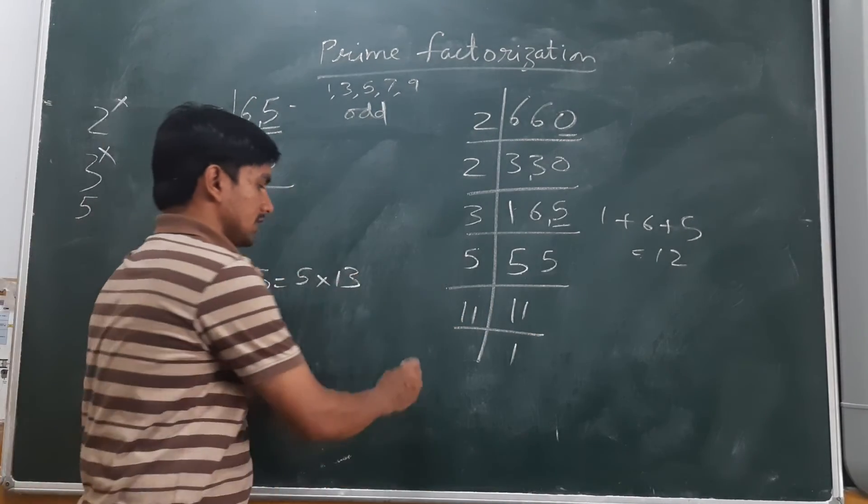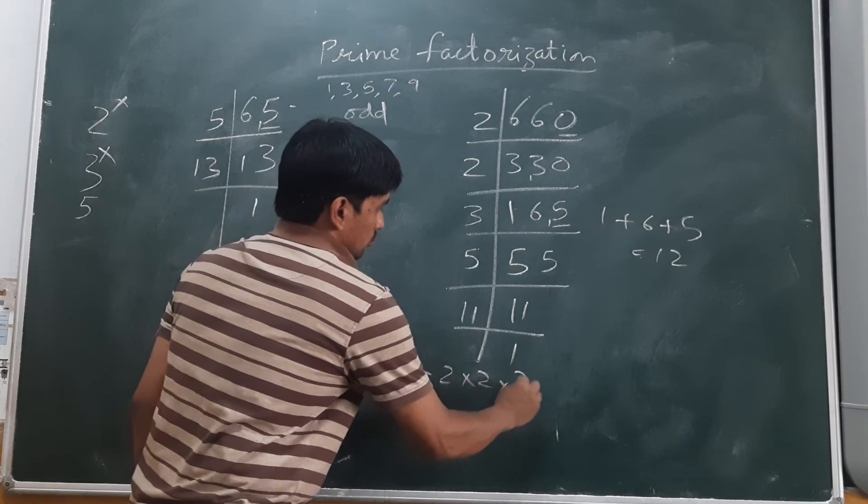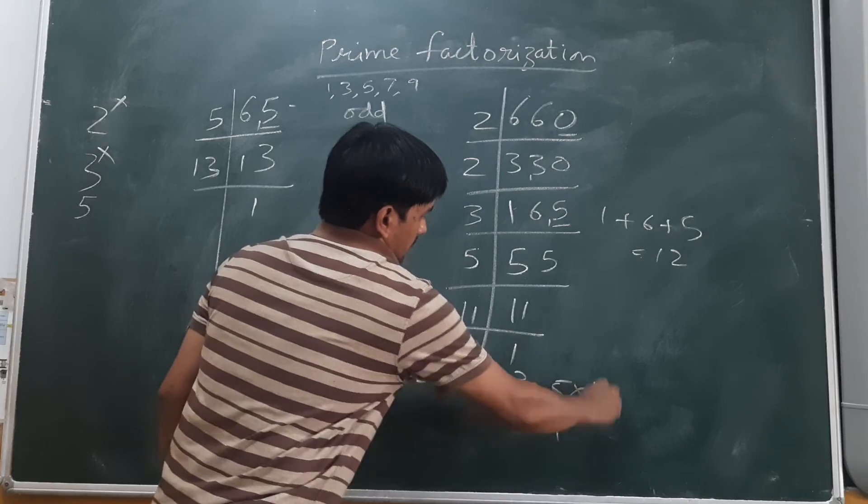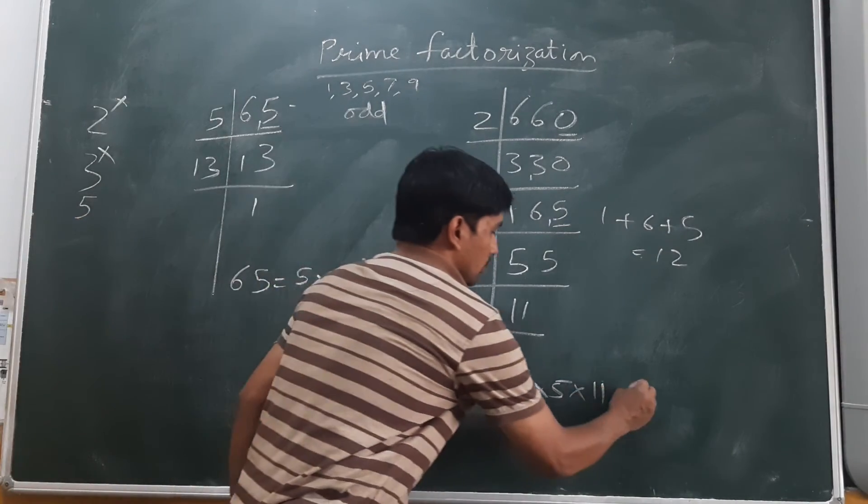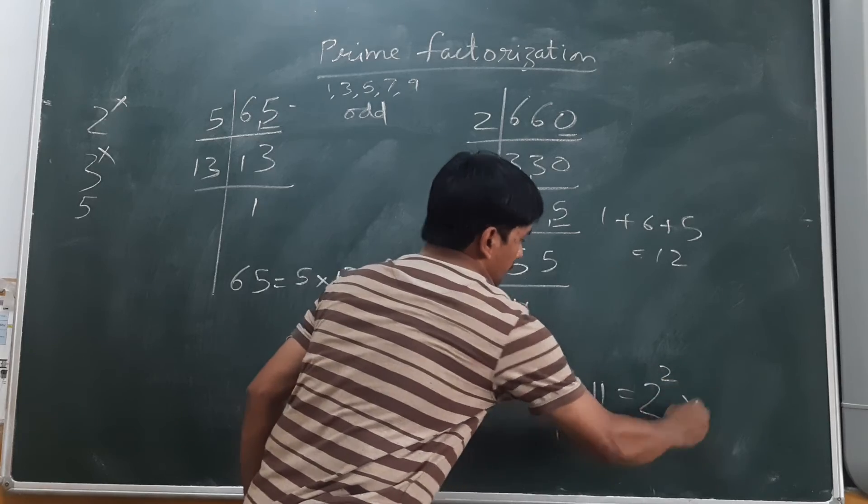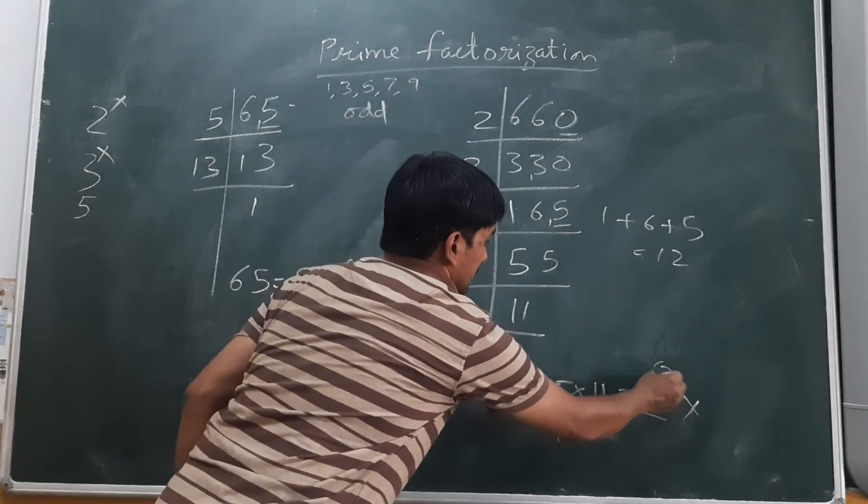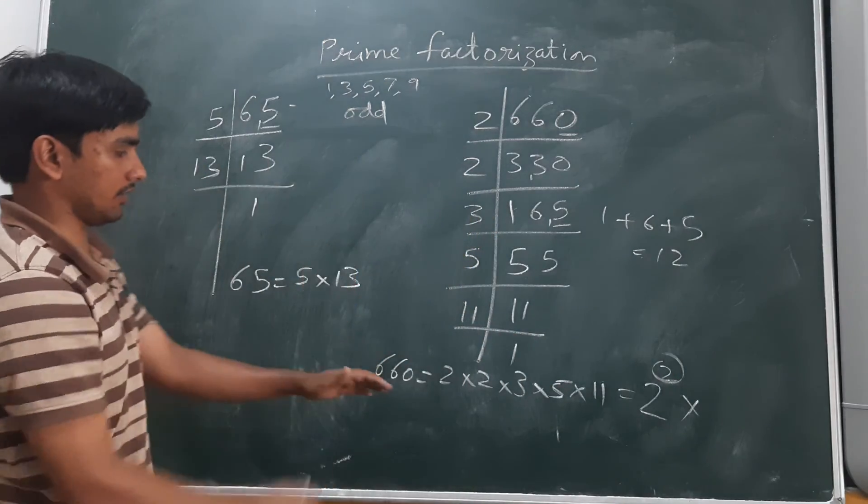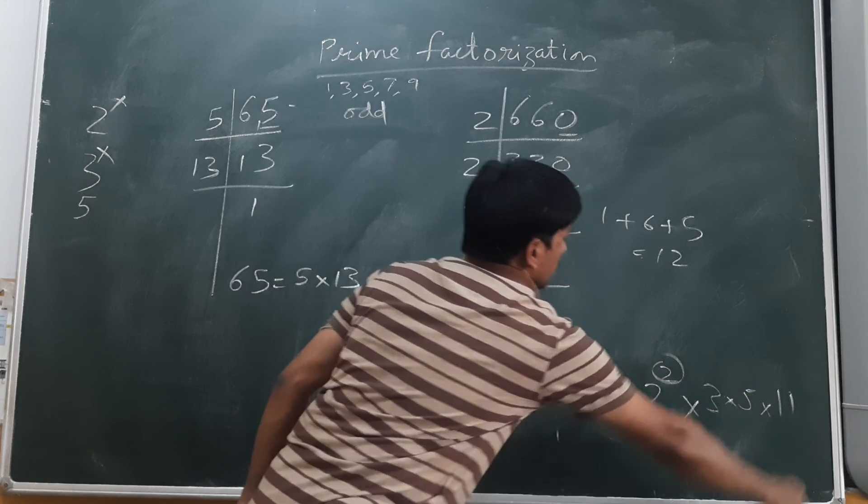So the prime factors of 660 we got as 2, 2, 3, 5, 11. Here also we can write, 2 is coming 2 times, we can write 2 to the power of 2. When 2 is coming 2 times in exponent, in its power we can write 2 to the power 2 times 3 times 5 times 11.